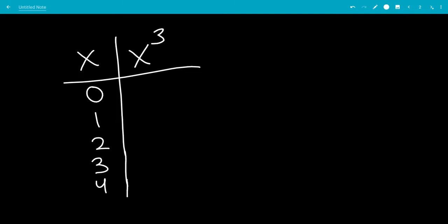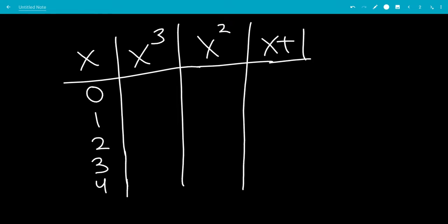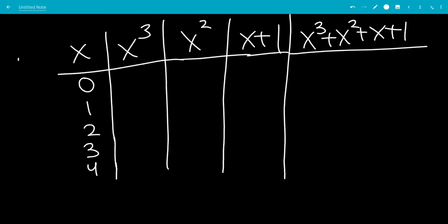So we're going to look at x cubed, x squared, and then x plus 1. So then we're going to plug in x cubed plus x squared plus x plus 1, and this is all mod 5.